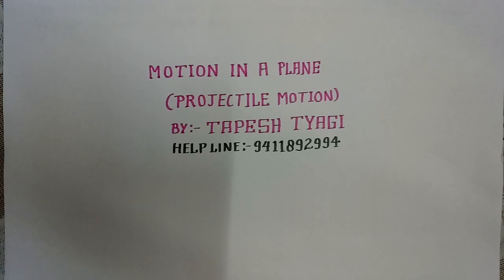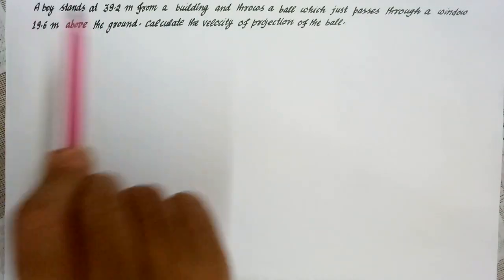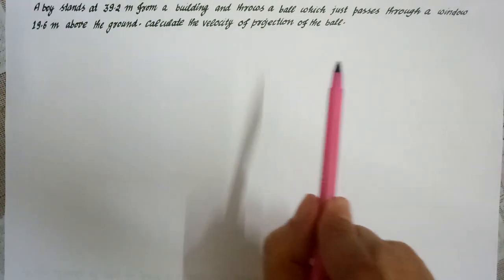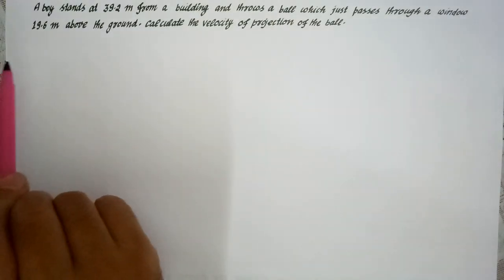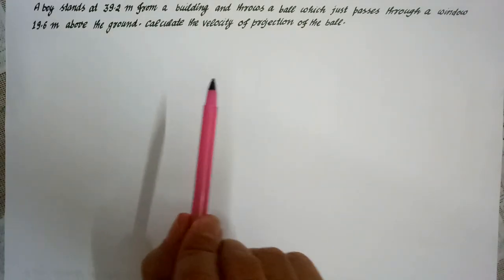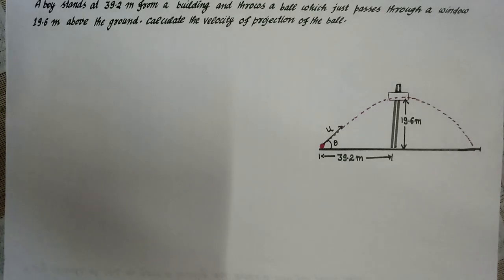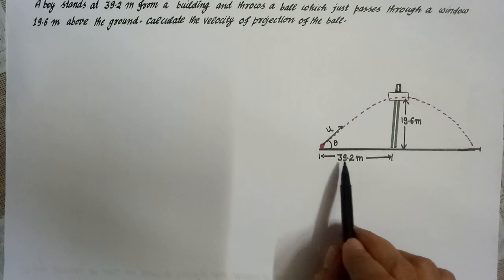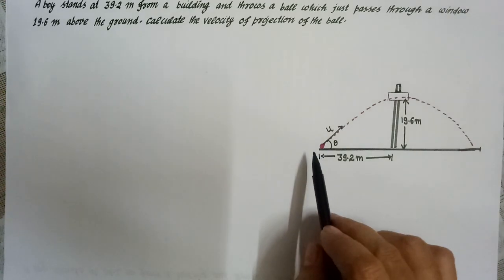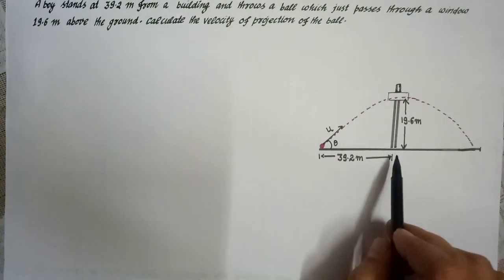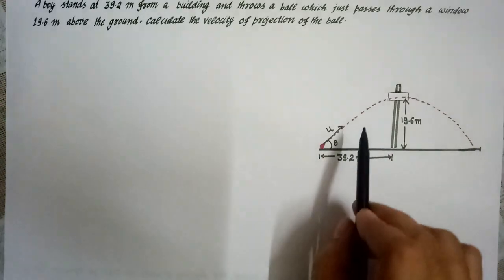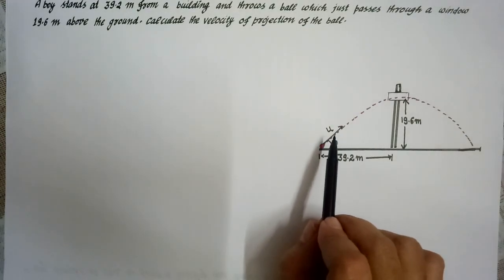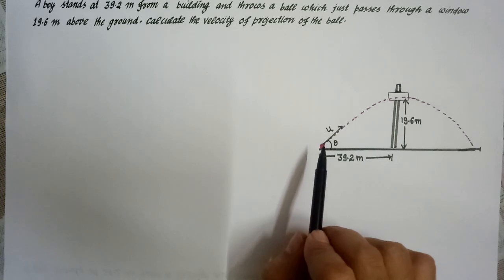हम पढ़ रहे हैं motion in a plane, और उसमें topic है projectile motion। हम solve कर रहे हैं एक numerical question। According to this question, a boy stands at 39.2 meter from a building and throws a ball which just passes through a window 19.6 meter above the ground। हमें velocity of projection of the ball calculate करनी है।